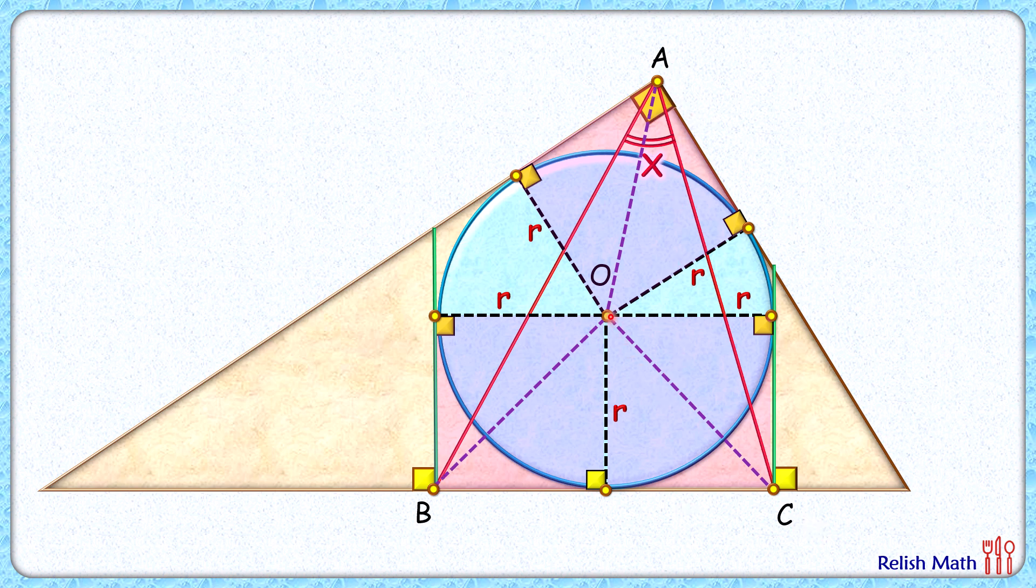So with O as center, we can draw a circle passing through A, B, C.